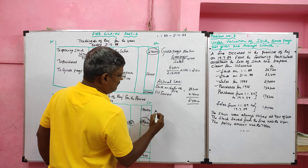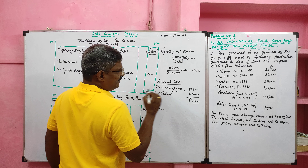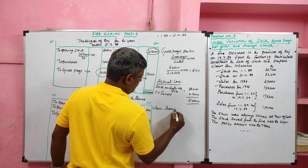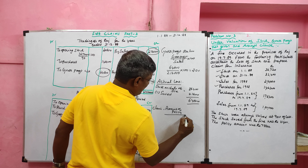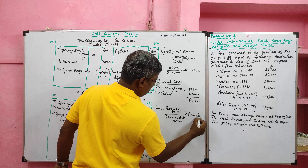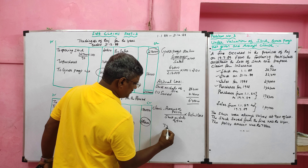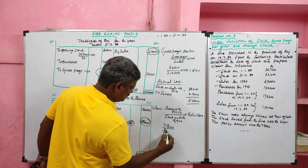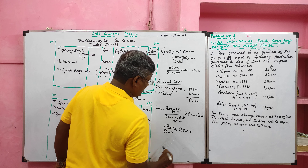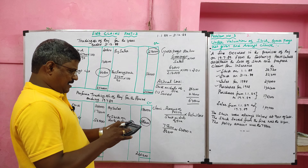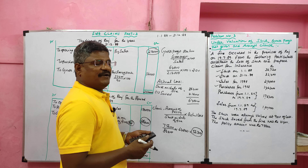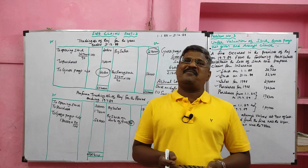Since the policy value is given, we apply the average clause. The formula is: amount of policy ÷ stock on date of fire × actual loss. Policy amount is ₹75,600, stock on date of fire is ₹86,400, and actual loss is ₹64,800. So ₹75,600 ÷ ₹86,400 × ₹64,800 gives a claim of ₹56,700. We have completed the third problem in relation to fire insurance claim. In the next class we will solve a different problem.